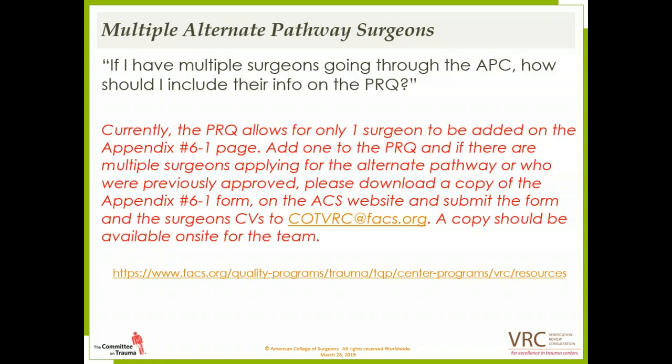If you have multiple surgeons going through the alternate pathway, how should you include their info on the PRQ? Unfortunately, the PRQ allows for only one surgeon to be added on the Appendix 6-1 page. Add one surgeon to the PRQ, and if there are other surgeons applying for or previously approved via the alternate pathway, please download a copy of the Appendix 6-1 overflow form from the ACS website. Submit that form and the surgeon CVs to the COTVRC inbox, and have a copy available on site for the team. You only need to submit CVs for new surgeons going through the alternate pathway.